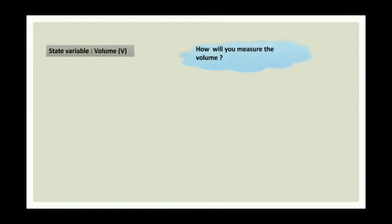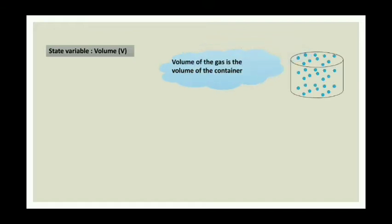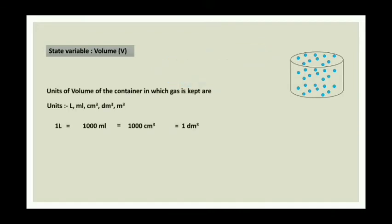Let us study about each state variable. First we will be moving to volume. Volume of a gas is the volume of the container. You should know the conversions as well: 1 liter is equal to 1 dm³ is equal to 1000 ml is equal to 1000 cm³. 1 ml is equal to 1 cm³ is equal to 1 cc.